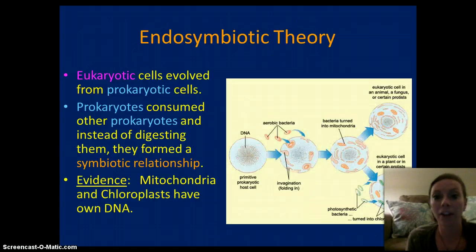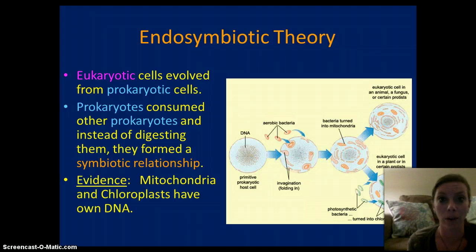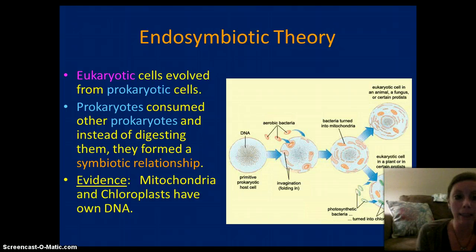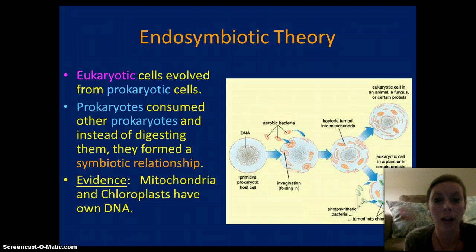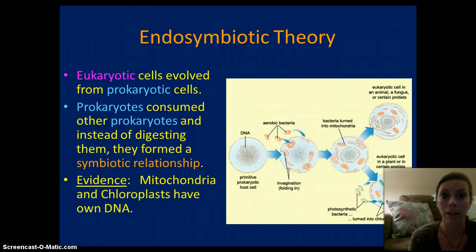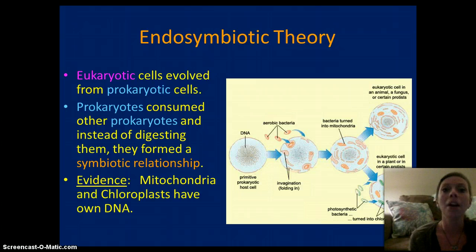Now, the endosymbiotic theory is a theory that states that eukaryotic cells have evolved from prokaryotic cells. It's a theory that the prokaryotic cells consumed another prokaryotic cell, leading to the eukaryotic cells and the organelles within them. The evidence for this would be that the mitochondria and the chloroplasts within the eukaryotic cells are much like a prokaryotic cell — they have common characteristics including their own DNA and their own set of ribosomes.